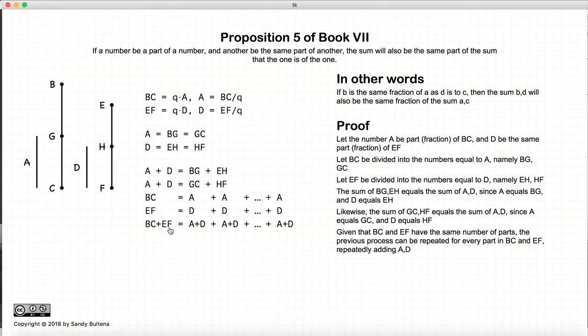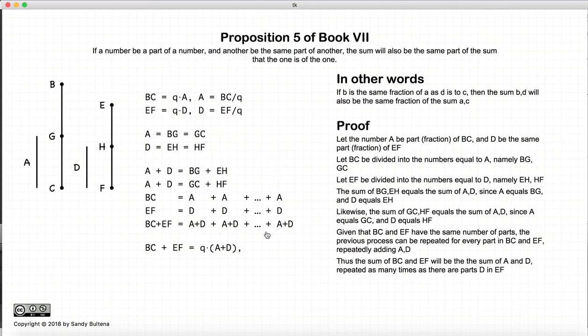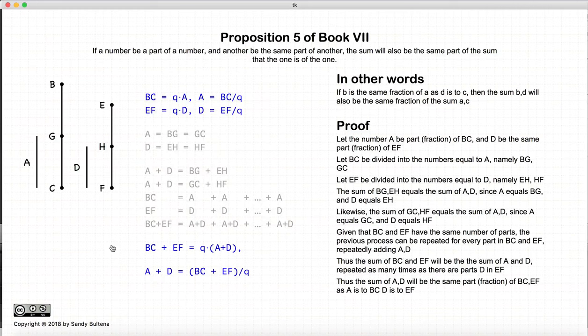So, bc plus ef would be equal to a plus d plus a plus d and so on and so forth to a plus d. So, in the end, we have that bc plus ef would be some multiple of a plus d and this multiple will be the same number as the number of times the parts fit into the numbers.